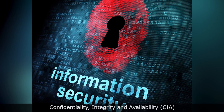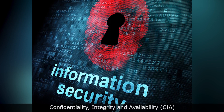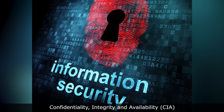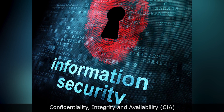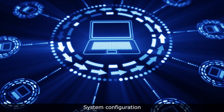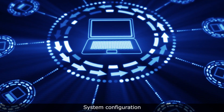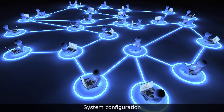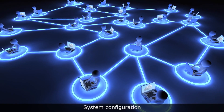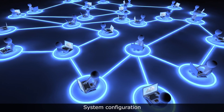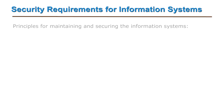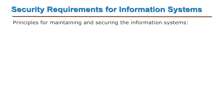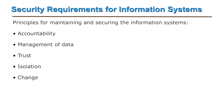The security principles are basically put in terms of a triad. We call it the CIA triad: confidentiality, integrity, and availability. Apart from the three fundamental security principles, information system security requirements also focus on system configurations, because based on well-defined security guidelines and the authorization of users, the system or network configuration is changed accordingly. In addition to this triad, there are principles for maintaining and securing information systems: accountability, management of data, trust, isolation, change, and compliance.